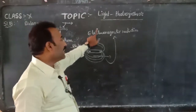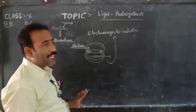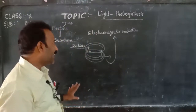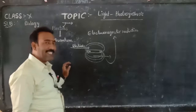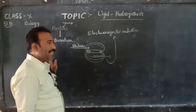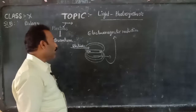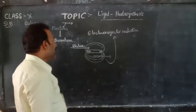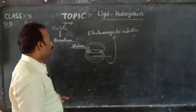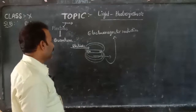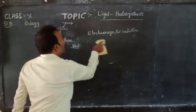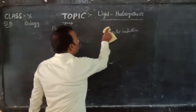Other than light, several components are present in the electromagnetic radiation. They are cosmic rays, gamma rays, X-rays, ultraviolet radiation, infrared radiation, radio waves, and microwaves. These are the components of electromagnetic radiation. So for photosynthesis, light is also very important.